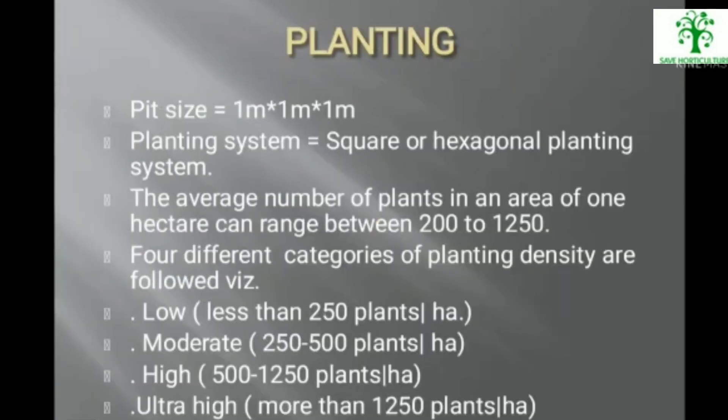The pit size of apple trees is 1m × 1m × 1m and the planting system adopted is square or hexagonal. The average number of plants per hectare ranges between 200 to 1250. Four density categories are followed: low (less than 250 plants/ha), moderate (250–500), high (500–1250), and ultra high (more than 1250 plants/ha).